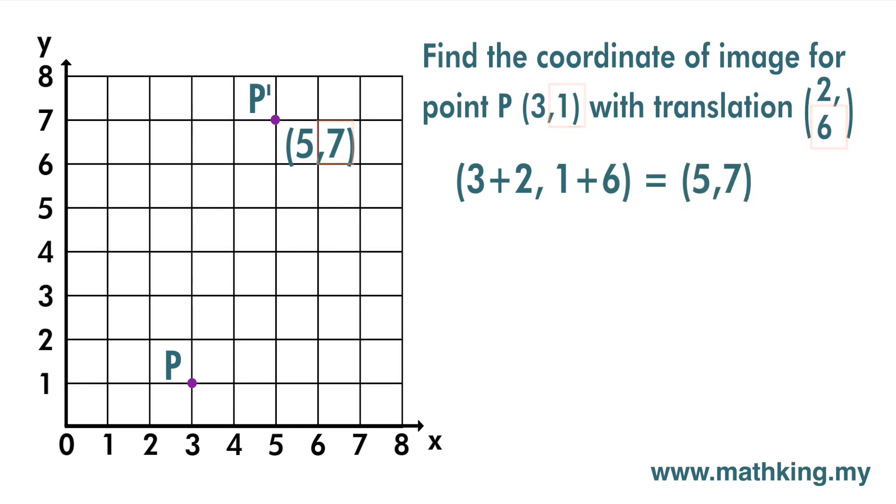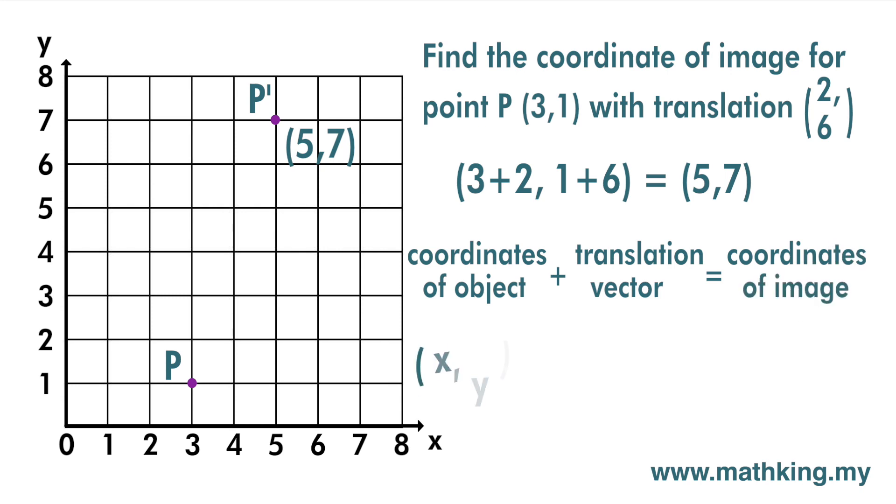So in general, the coordinate of object plus the vector, we get coordinate of image. So the coordinate (x, y) plus translation vector (a, b), we get (x + a, y + b). And this is the coordinate of the image.